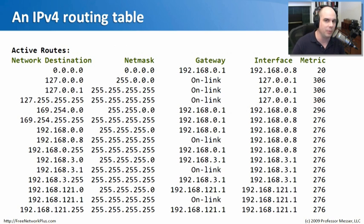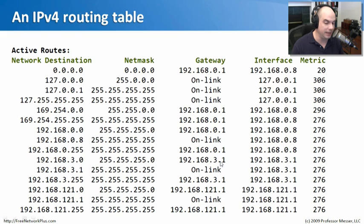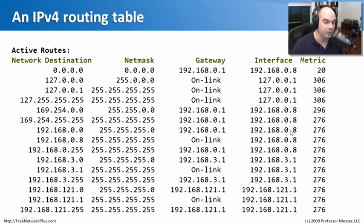Here is a routing table with next hops shown. Anything going to 192.168.3.0 has a gateway of 192.168.3.1 — that's the interface, that's our next hop. If we need to go to anything on 192.168.0.0, we go out 192.168.0.8, which is the interface in our machine, to our next hop of 192.168.0.1. There are also metric numbers — this indicates how far we need to go to reach those networks. The lower the metric, the more preferred that link. The higher numbers are less preferred, so we use lower numbers first. The router knows the next hop and uses its routing table to make decisions.